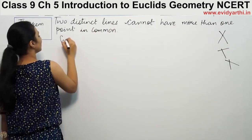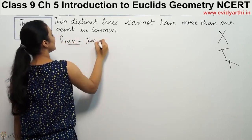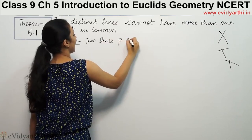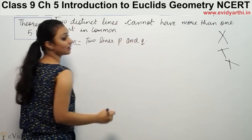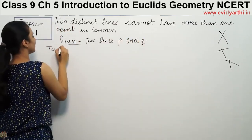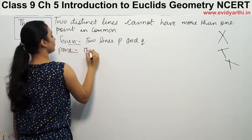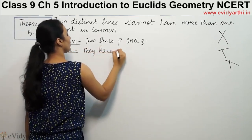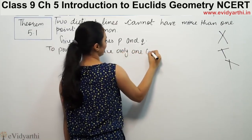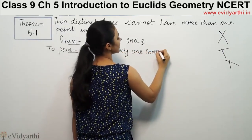So we are given two lines, supposedly P and Q. Now we have to prove that they have only one common point. The number of common points is one.